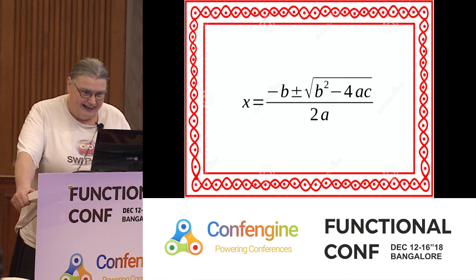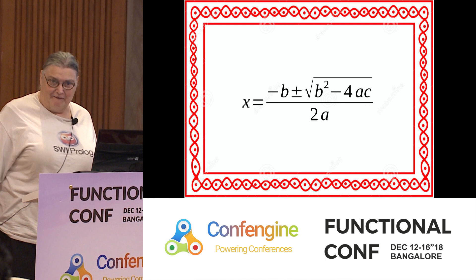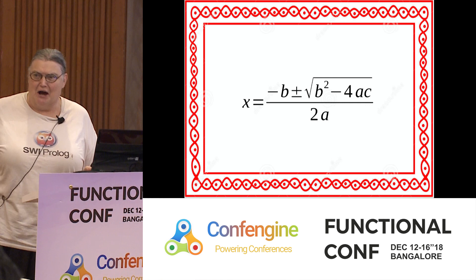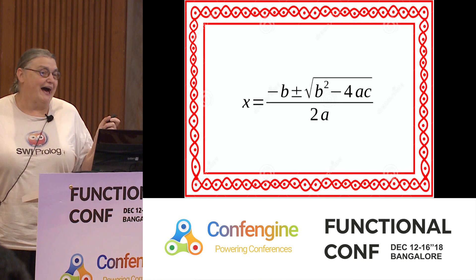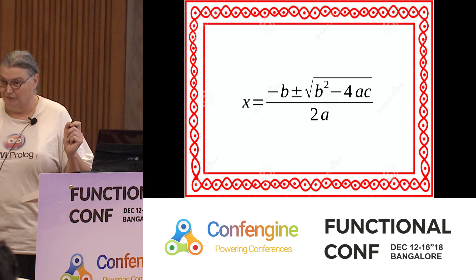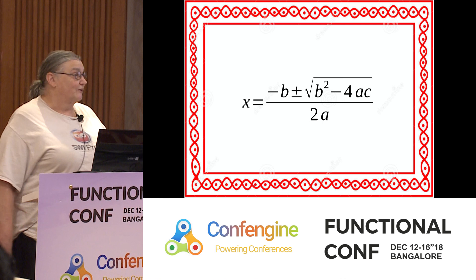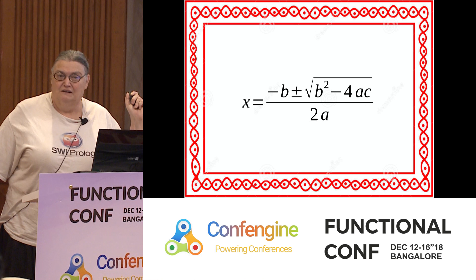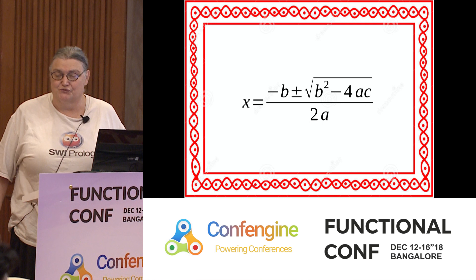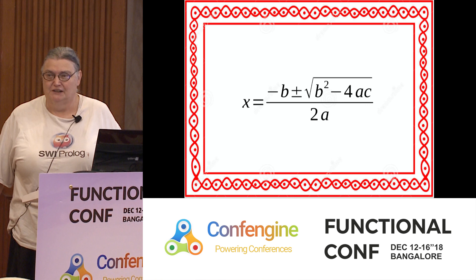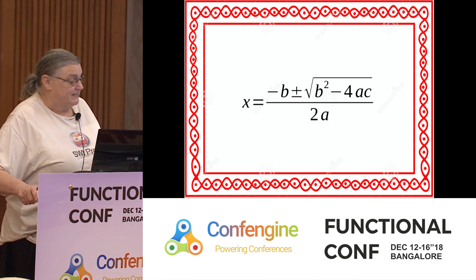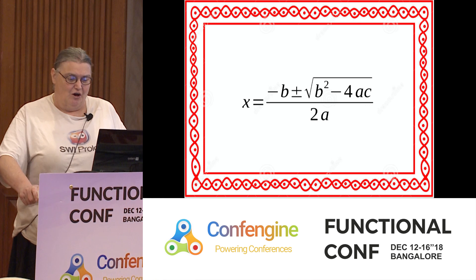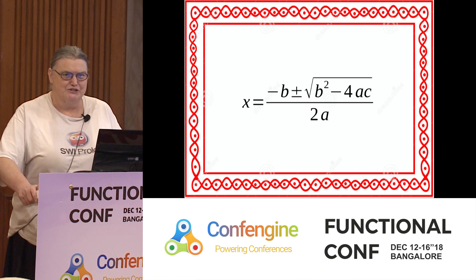Seventh standard algebra — you have variables and proofs. We all had variables, sometimes called unknowns, like X. X is an unknown and this is the quadratic formula. They're called unknowns because they represent things that we know have a value, but we don't know what that value is yet. And anybody note anything odd about the quadratic equation? There might be how many values for X? Two, or one, or none, depending on A, B, and C.